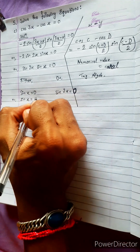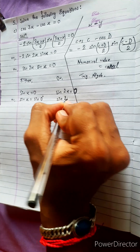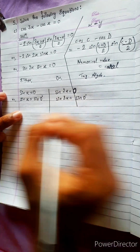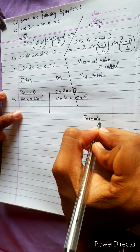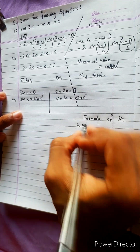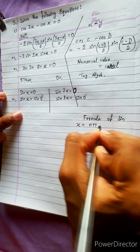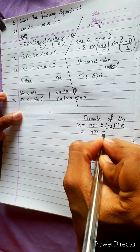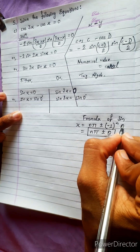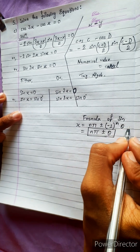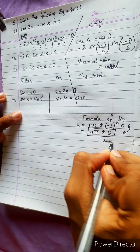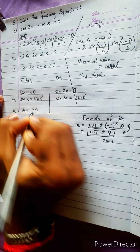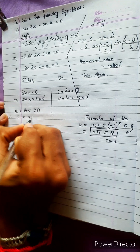Sin 0 is 0. So let's write sin x equals sin 0 degrees. Now let's use the general formula of sin. There are many formulas like n pi plus minus minus 1 to the power n times theta, but don't write that complex formula. Use the easy formula x equals n pi plus minus 0. Therefore x equals n pi. That's one answer.